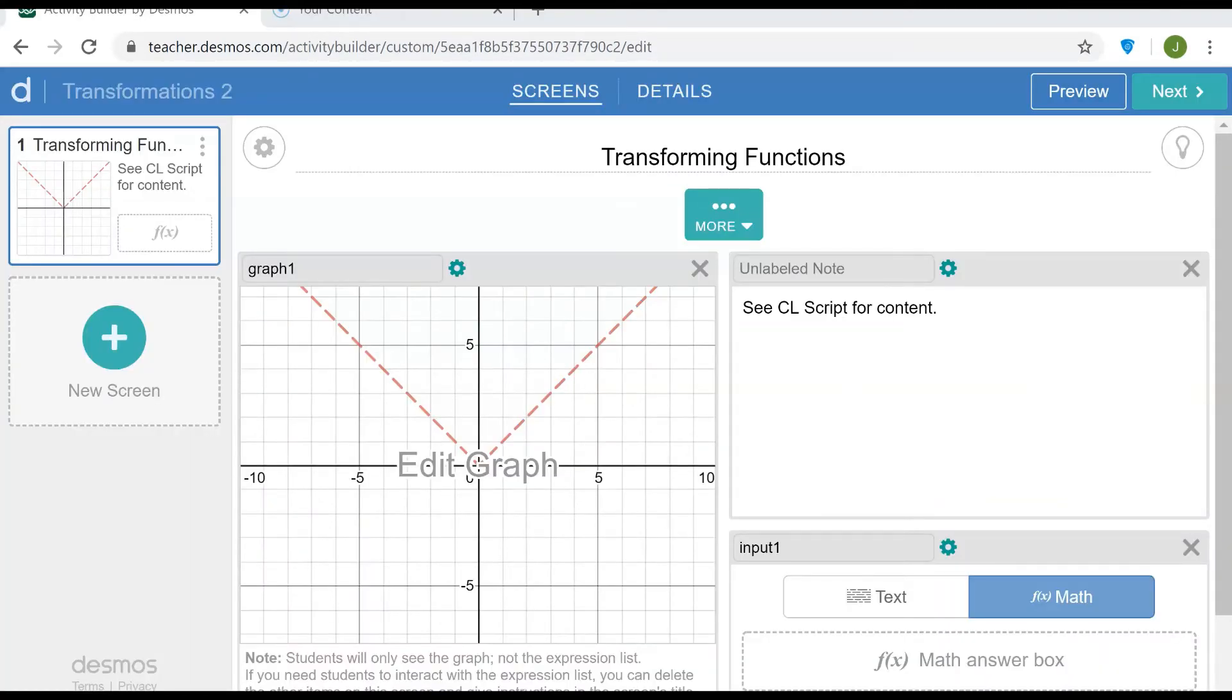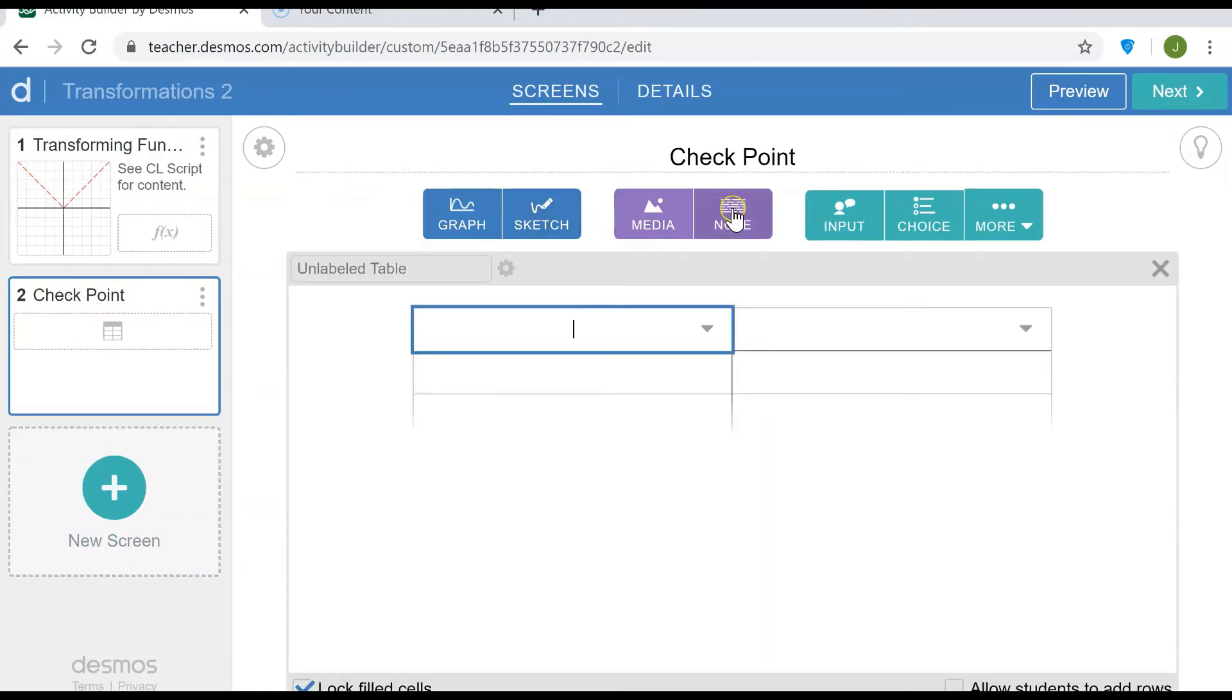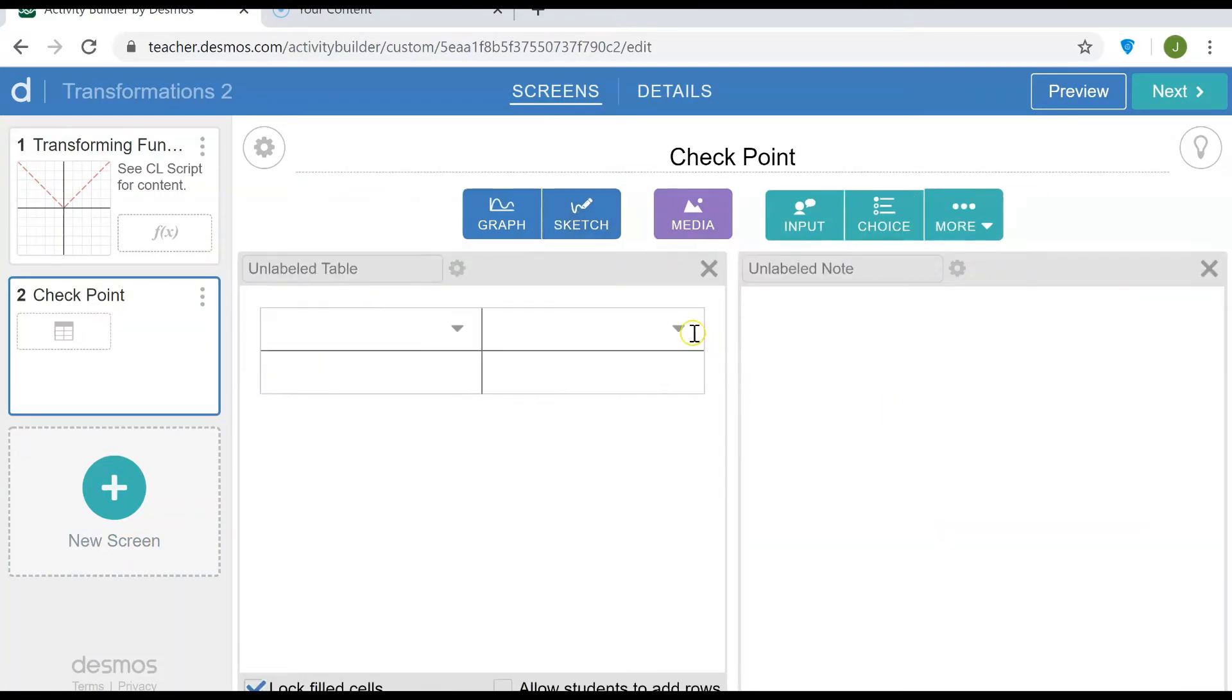So this is one way to provide the student with feedback on their responses. Now a second way that we could provide a student with feedback is on a separate screen in a table. So let me add a new screen and I'm going to call this Check Point and add a table. And let me also add a note.